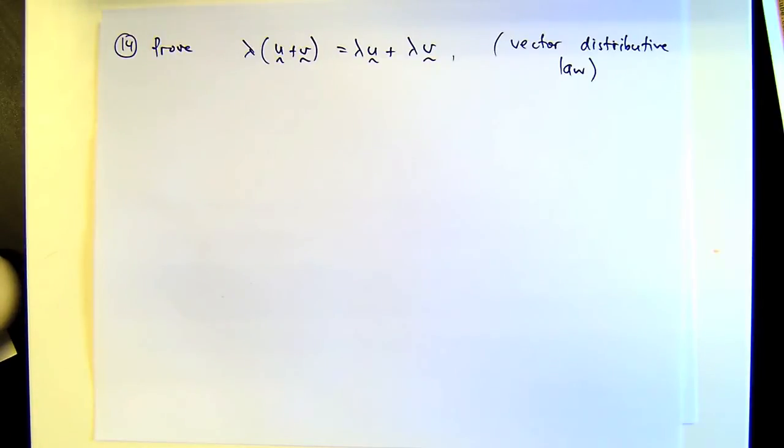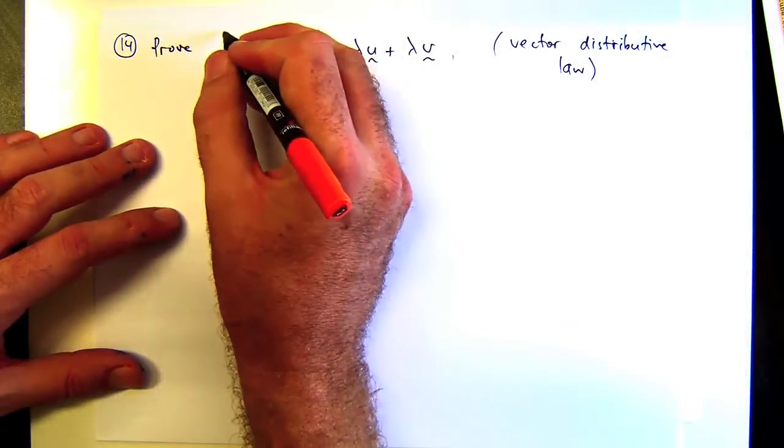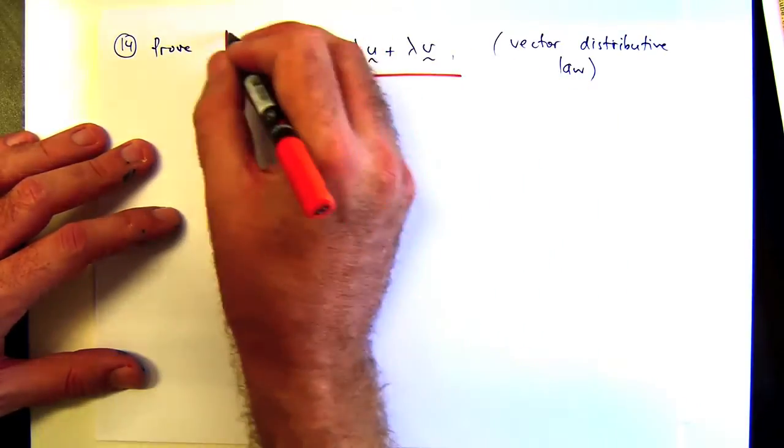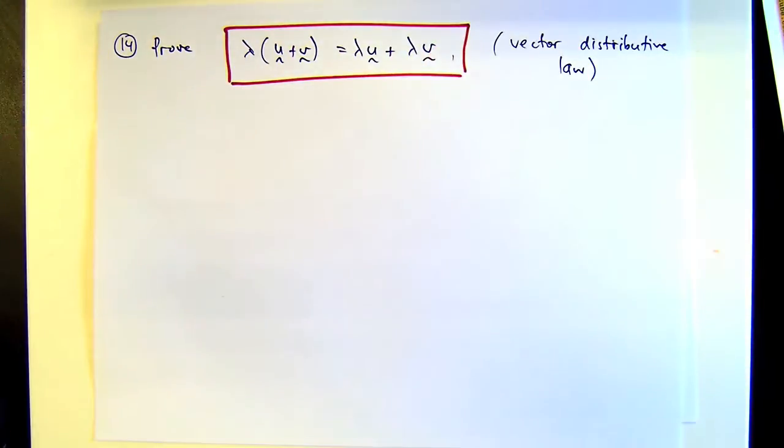Here we're asked to prove the vector distributive law for addition. Lambda is any scalar, and u and v are any vectors. We want to show that this is the case. With these proofs, as I've been showing you, they're not difficult. You've just got to take a little bit of care and work in a component-wise fashion.